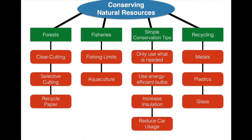Let's wrap up our graphic organizer: you can recycle metals, plastics, glass, and paper. To conserve natural resources and keep everything sustainable — we conserve forests through clear cutting, selective cutting, and recycling paper. Fisheries and other animals can be made sustainable through fishing limits or aquaculture. Simple things you can do: only use the resources you need, use energy-efficient bulbs, increase insulation, reduce car usage, and make sure you recycle metals, plastics, glass, and paper. That's our lesson and that's it for the chapter. Hope you enjoyed it, and if you have any questions, please let me know. Thanks for watching.